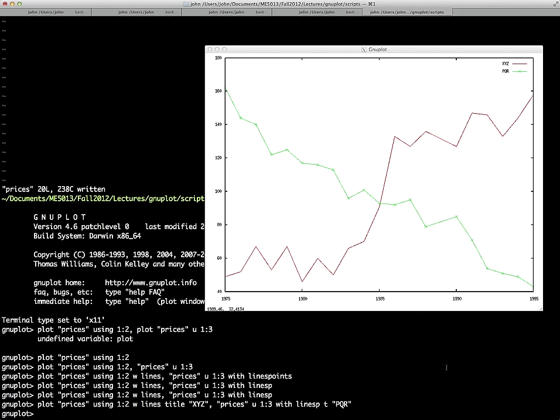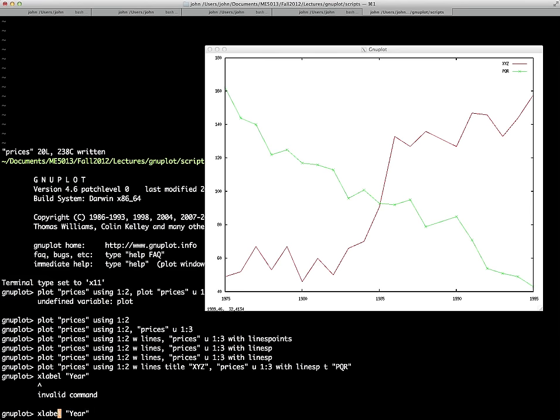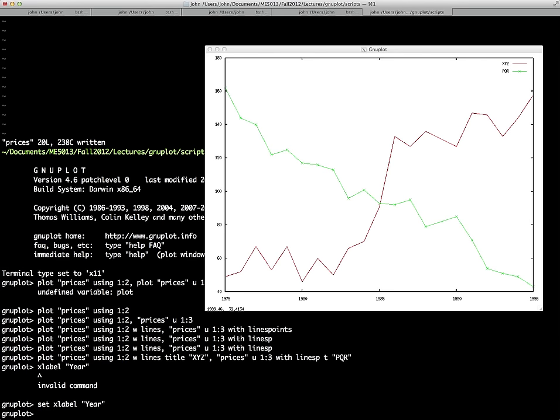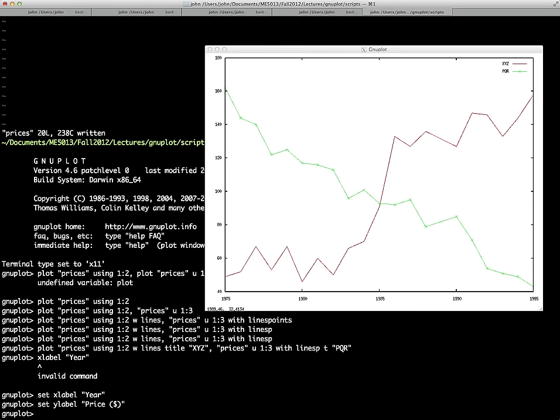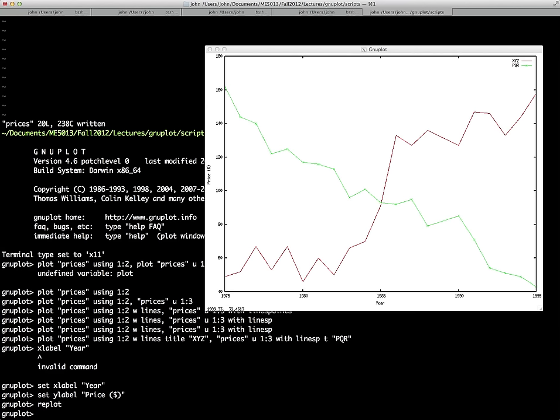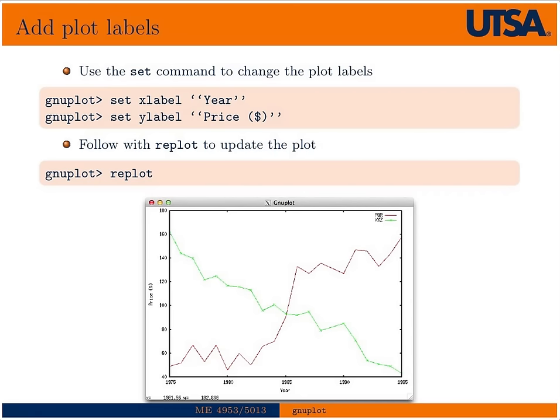Okay. So, we can also then label our plot. So, if you wanted to give it an X label, label the ordinate axis, we could say year. I'm sorry, we need to use the set command. So, we'll say set X label year, set Y label price, give it a unit. Now, you notice just simply doing that doesn't change anything. We actually have to run the command replot, which will rerun the last plot command with all the new settings. So, in this case, if we run replot, then we get year and price as well in our plot.